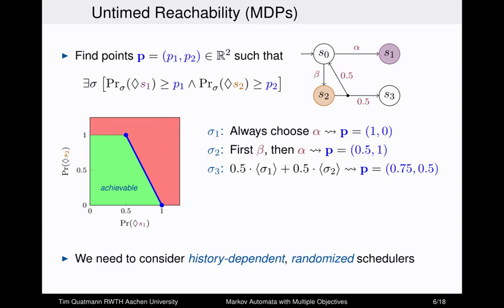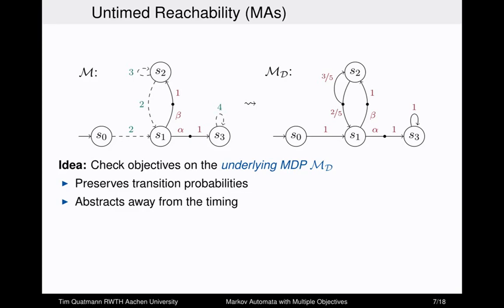The final picture shows the green area of achievable points — for each such point, a scheduler exists achieving the corresponding probabilities — and a red area where this is not possible. This approach exists for MDPs already, so now let's try to lift this to Markov automata.